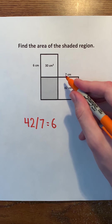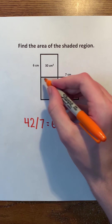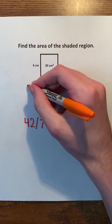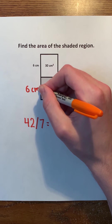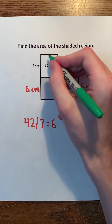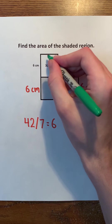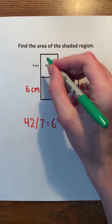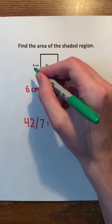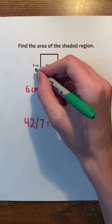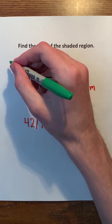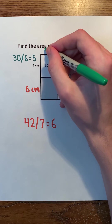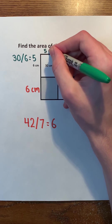6 times 7 is 42. Because this shape is also a rectangle, this side of the rectangle must also be 6 centimeters. Now, let's find the length of this side. In this other rectangle, we know that the area is 30 centimeters squared, and this side of the rectangle has a length of 6 centimeters. So, we can divide 30 by 6 to get 5, which means that this side of the rectangle has a length of 5 centimeters.